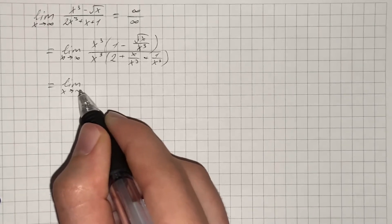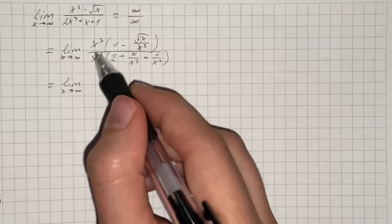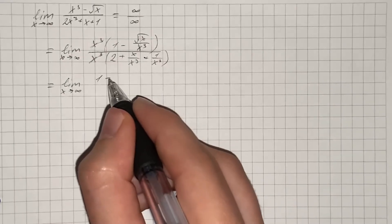That equals to the limit as x approaches infinity. So we cancel out x cubed and get 1 minus...